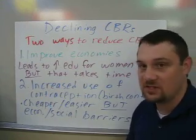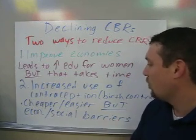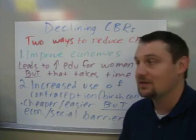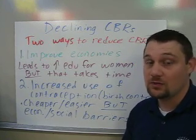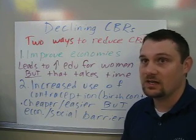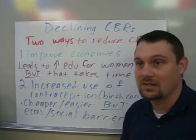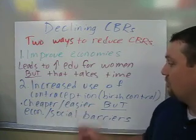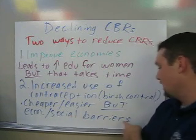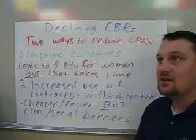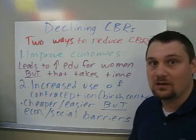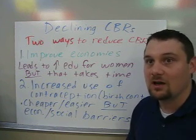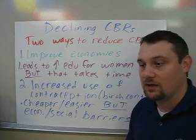The second way to decrease your CBR is to increase the use of contraception or birth control. Birth control is the cheapest it's ever been in history and very easy to distribute — charities will go in and distribute condoms or birth control pills to women after medical consultations. The downside is there are economic and social barriers. People in rural areas may not have access to free birth control, and there may be religious, political, or economic restrictions on using birth control.